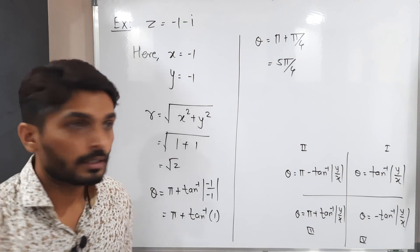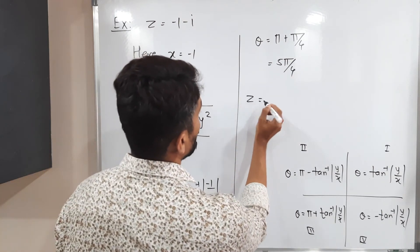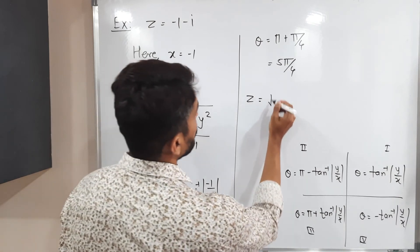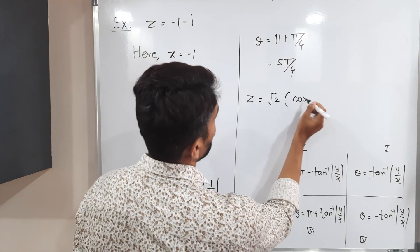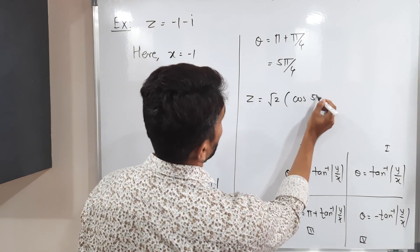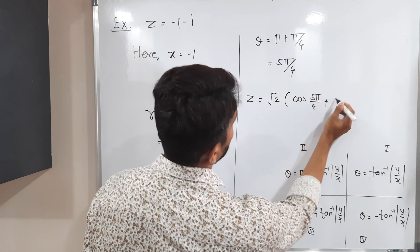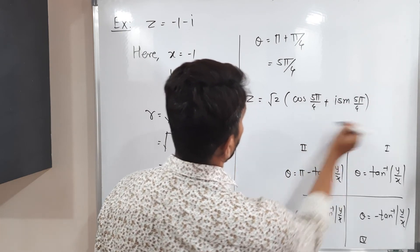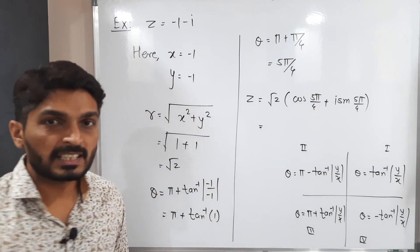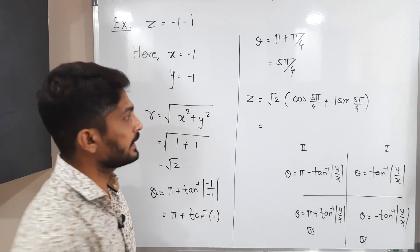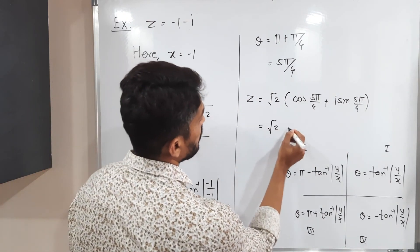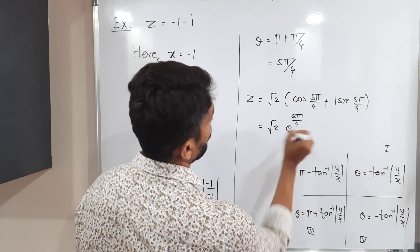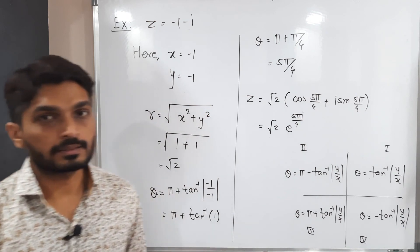We now have R equals root 2 and theta equals 5 pi by 4, so we can express Z in polar form: Z equals root 2 times (cos 5pi/4 plus i sine 5pi/4). You can also express the same number in exponential form: Z equals root 2 e raised to i times 5pi/4. This is the required answer.